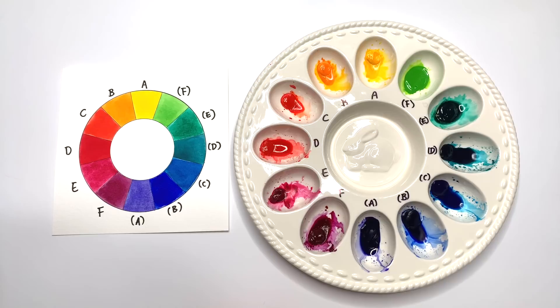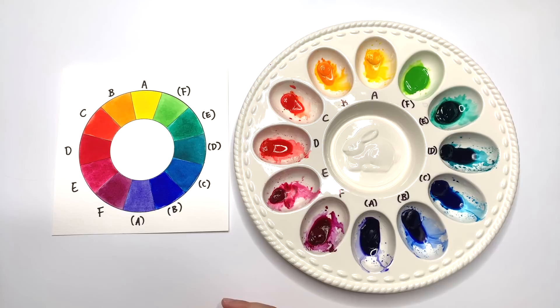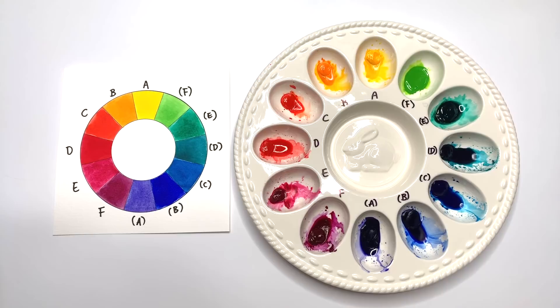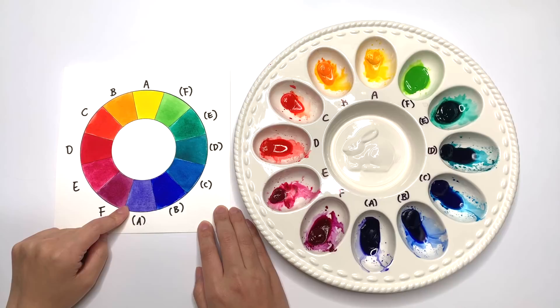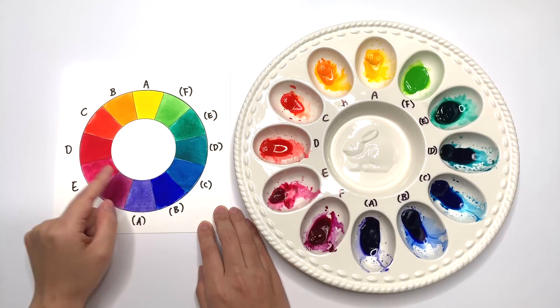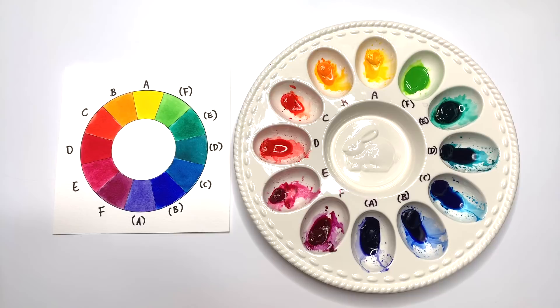For this episode, we are going to focus on color mixing with complementary colors. Complementary colors are colors that are directly opposite each other on the color wheel. So this one and this one, the A pair, is a complementary color to each other, and then the B pairs are complementary to each other, and so on. We have six pairs of complementary colors in this 12 color wheel palette.